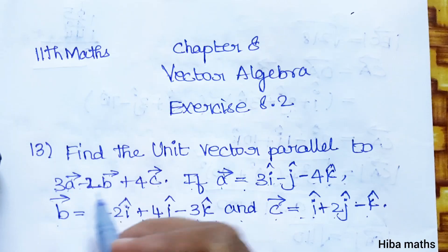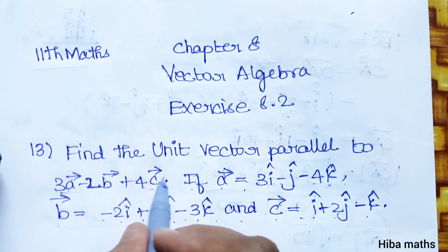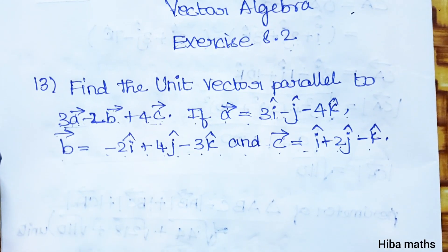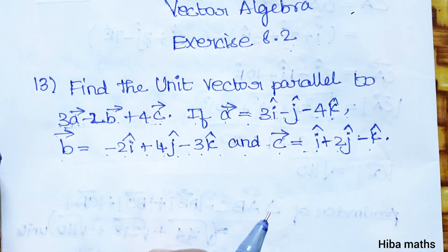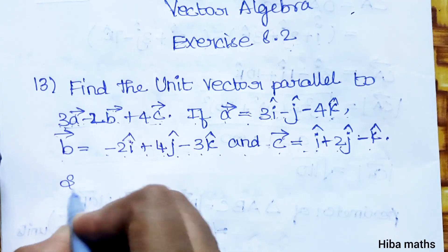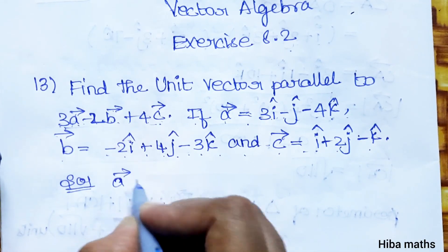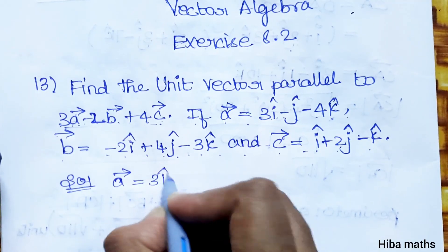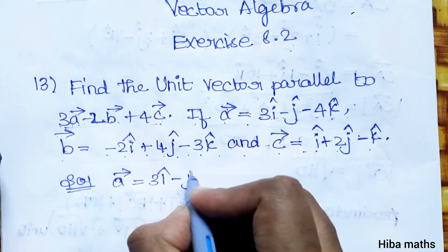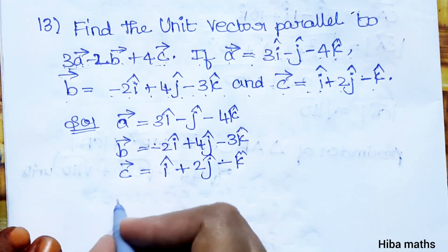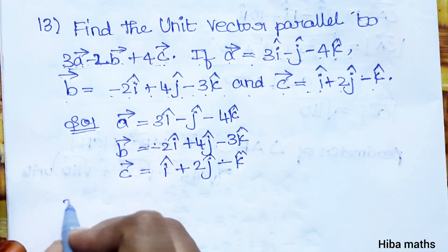To get the unit vector parallel to this expression, we substitute A, B, and C into the equation and find the value. So for the solution, first we write the given vectors: A vector, B vector, and C vector. Now we find the vector parallel to the given expression.